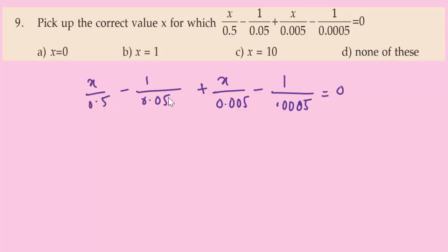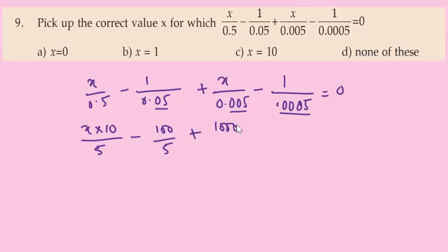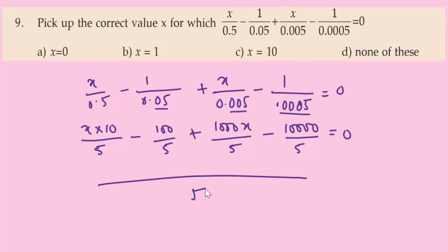To remove decimals, multiply numerators by powers of 10 matching decimal places: X/0.5 becomes 10X/5, 1/0.05 becomes 100/5, X/0.005 becomes 1000X/5, and 1/0.0005 becomes 10000/5. The common denominator is 5. The equation becomes: 10X - 100 + 1000X - 10000 = 0.